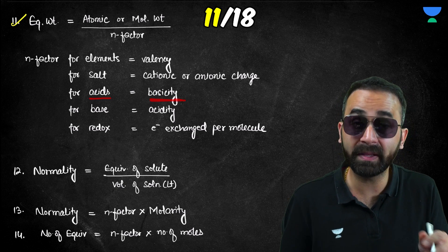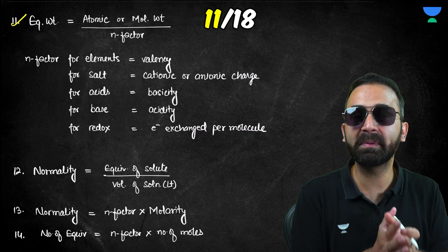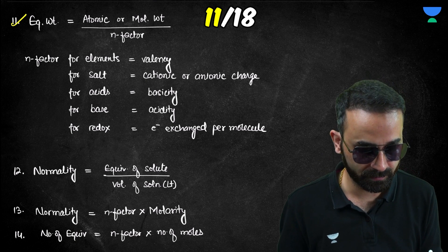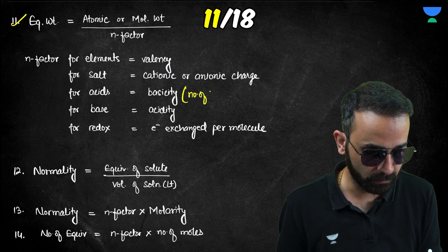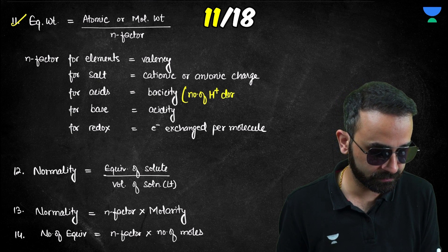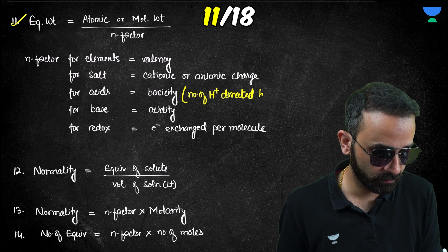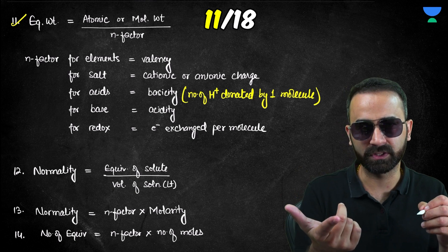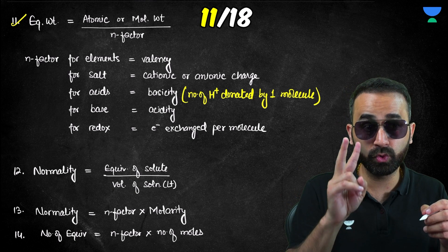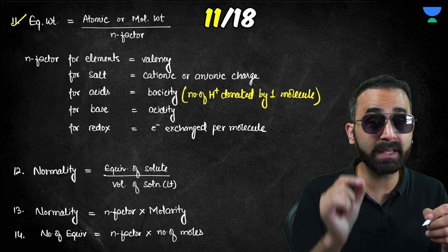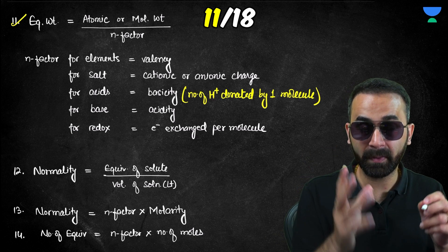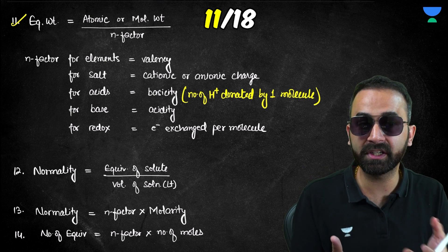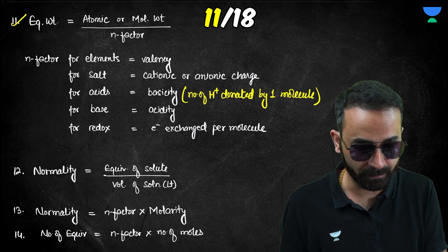For acids, the n-factor equals the basicity — the number of H⁺ ions that can be donated by one molecule. HCl donates one H⁺, H₂SO₄ donates two H⁺ per molecule, and H₃PO₄ donates three H⁺ per molecule. So for an acid, the number of H⁺ donated per molecule is the n-factor.